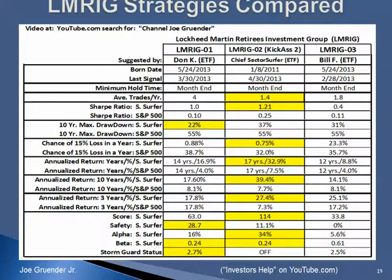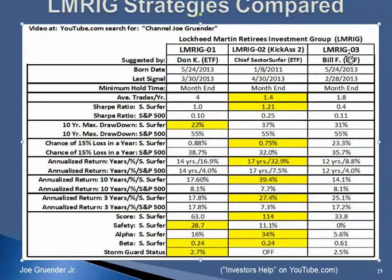I then extracted all of the information from the three charts and put them into this comparison matrix. Don's strategy 01 information is shown here; the Kick-Ass 02 strategy from the Hall of Fame is inserted here; and Bill's information from his strategy is inserted here. In video number two we're going to analyze each of these items row by row and discuss them, so you have a thorough understanding of what exactly is available in a Sector Surfer chart.